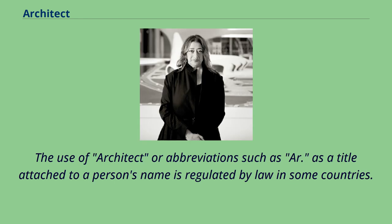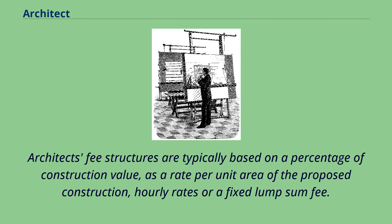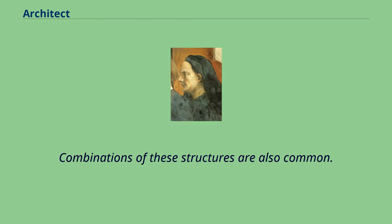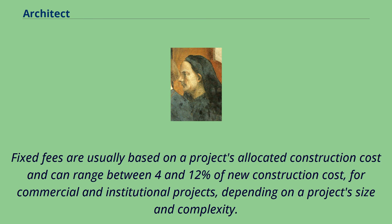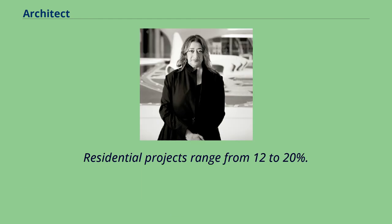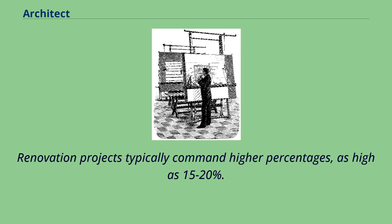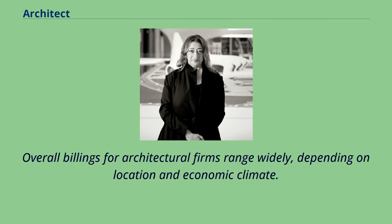The use of architect or abbreviations as a title attached to a person's name is regulated by law in some countries. Architect's fee structures are typically based on a percentage of construction value, as a rate per unit area of the proposed construction, hourly rates or a fixed lump sum fee. Combinations of these structures are also common. Fixed fees are usually based on a project's allocated construction cost and can range between 4 and 12% of new construction cost for commercial and institutional projects, depending on a project's size and complexity. Residential projects range from 12 to 20%. Renovation projects typically command higher percentages, as high as 15 to 20%.